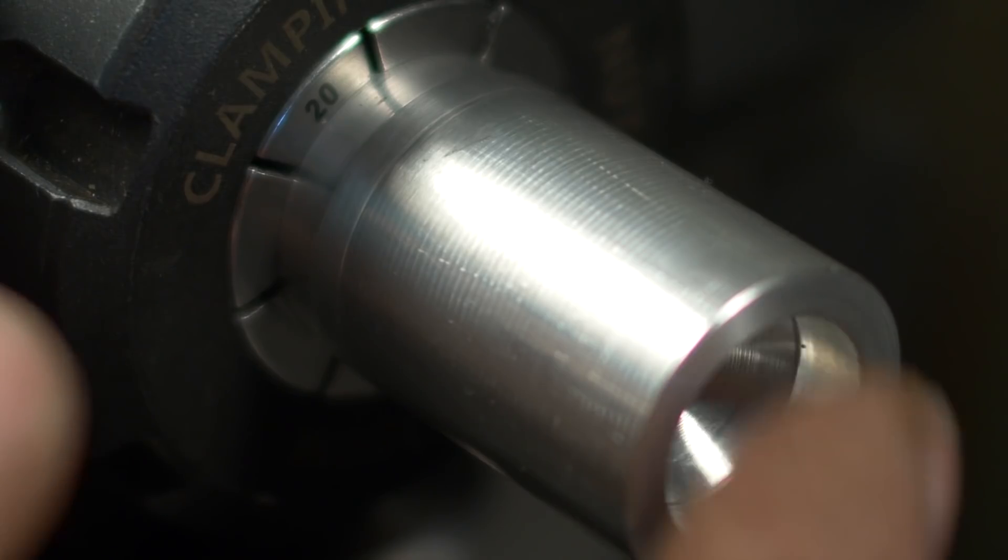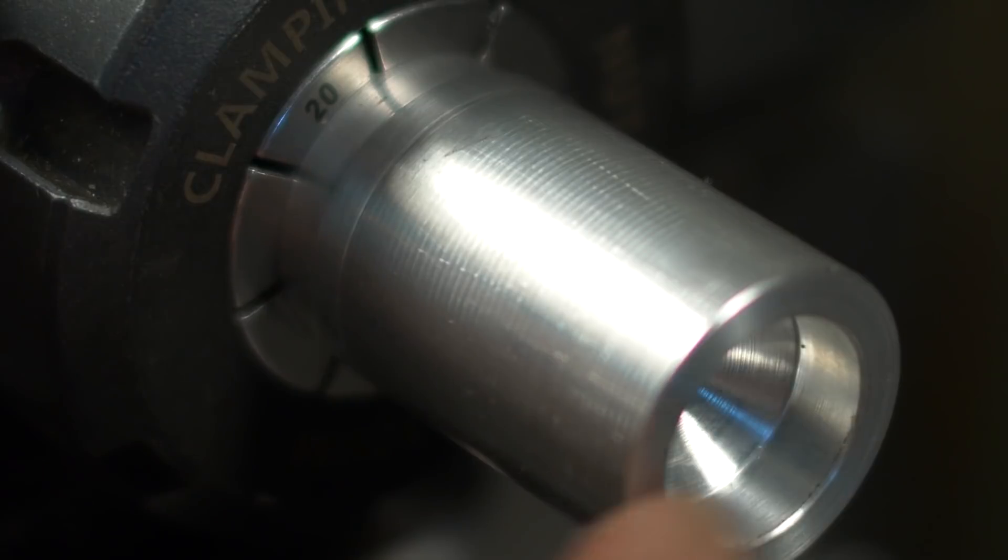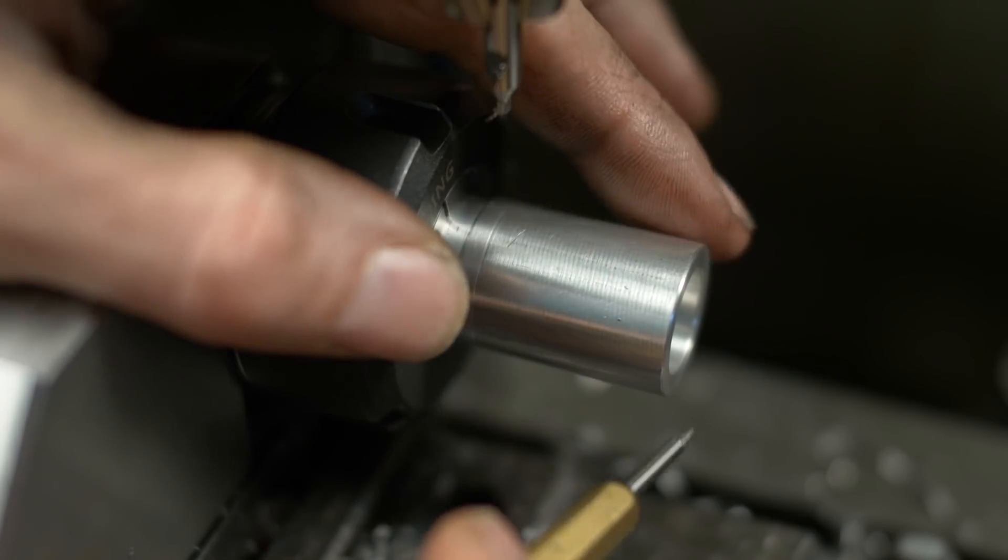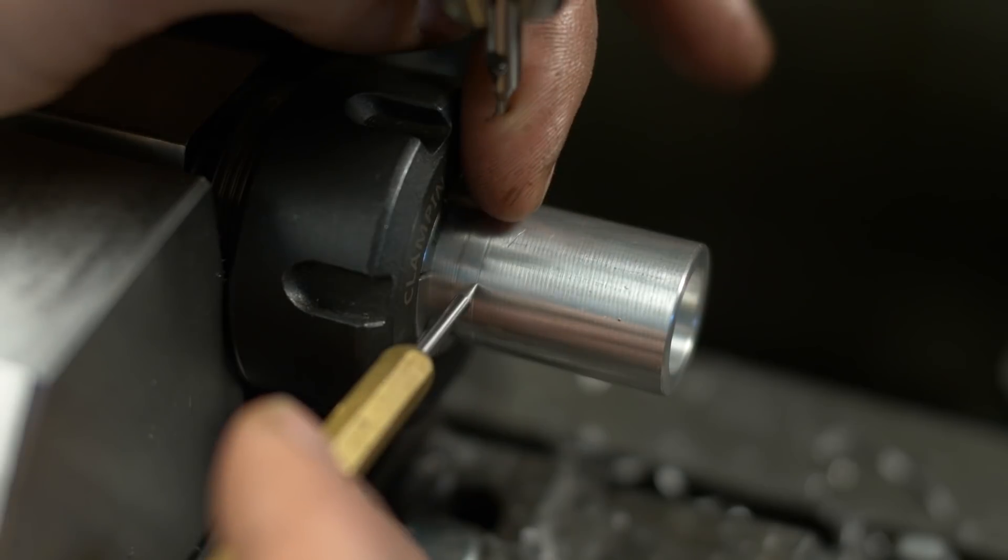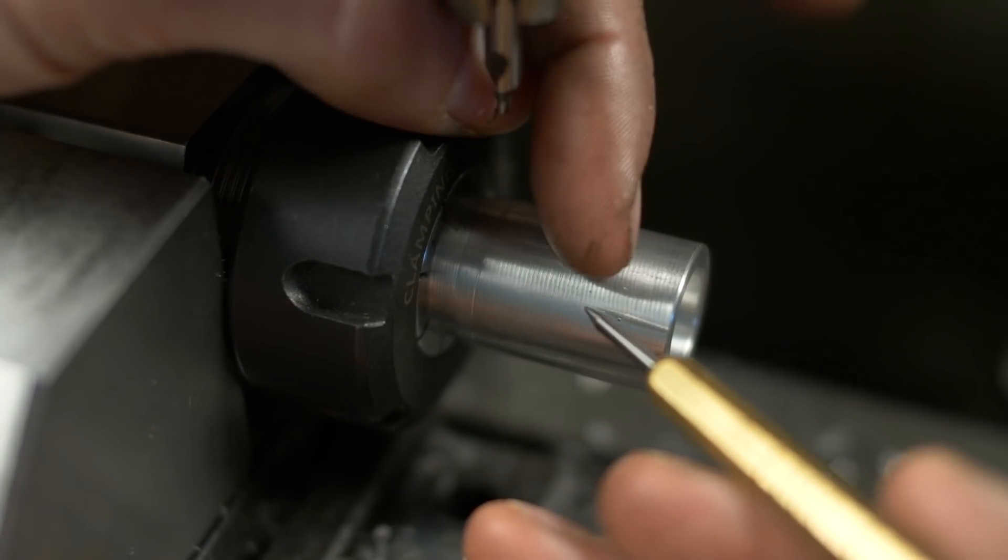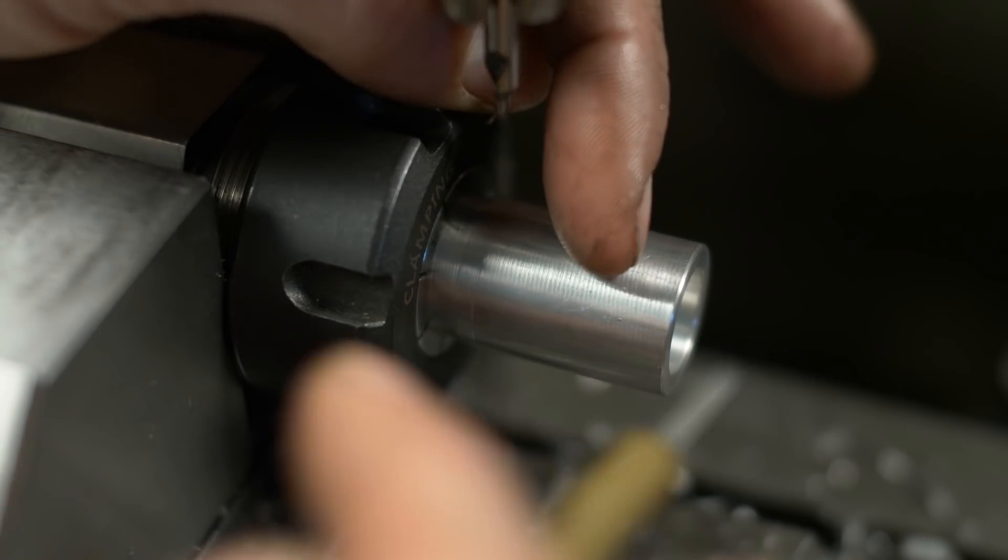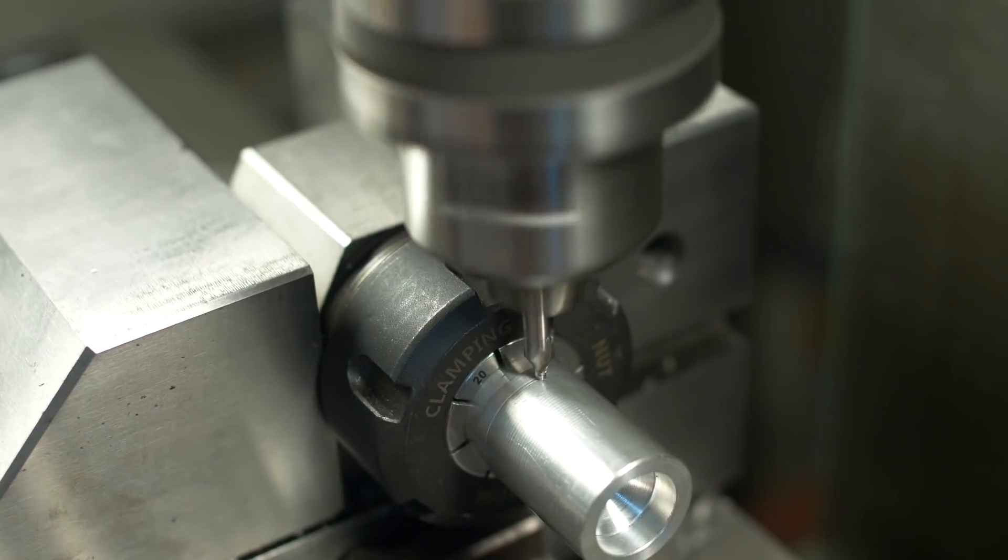I also added a counter bore and put the taper in deeper. The outside of this expanding arbor is going to flare outwards, especially at the tip. Back here it won't so much. So by sinking this taper further in, this will be able to push from deeper in, it will give us a better mating surface.